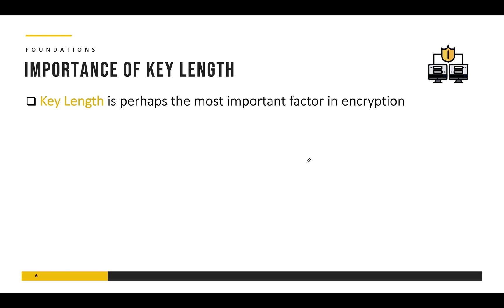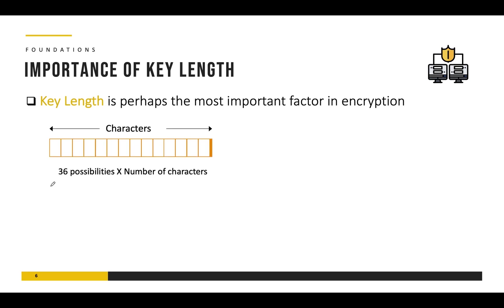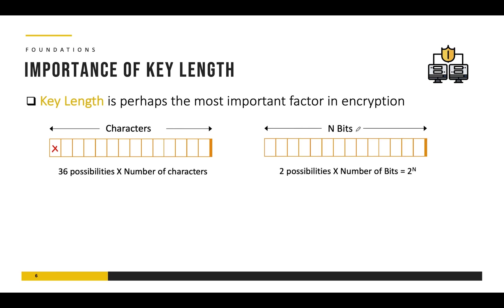Perhaps the single most important factor which can determine the strength of encryption is the key length — the longer the key the better. Say you have a password with x number of characters; for every character you can select from a to z (26 alphabets) or digits 0 to 9 (10 digits), giving 36 possibilities per character. But computers understand binary numbers, so we talk about key lengths in terms of bits. Since we are talking about binary, every bit can either be 0 or 1, so if you have a key of n bits, you have 2 raised to the power n different combinations possible.